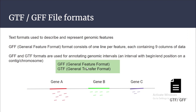The GTF and GFF formats are used for annotating genomic intervals. These files are basically text formats used to describe genomic features. When you open these files, you will see the file format consists of one line per feature, so each row belongs to one feature, having nine columns of data providing information related to a single feature.